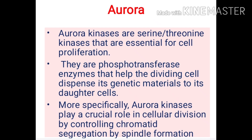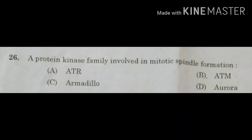The last option is aurora — a serine-threonine specific protein kinase mainly involved in cell proliferation. They transfer genetic materials to daughter cells. The most specific function of aurora kinase is spindle formation. Aurora kinases are involved in spindle fiber formation during mitosis, enabling the transfer of chromatids to the daughter cell, which leads to cell division. The correct answer is option D: aurora.